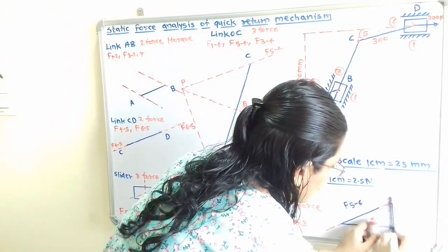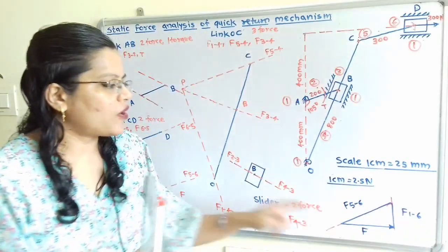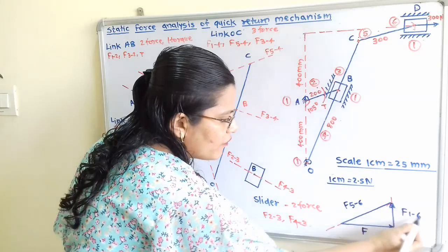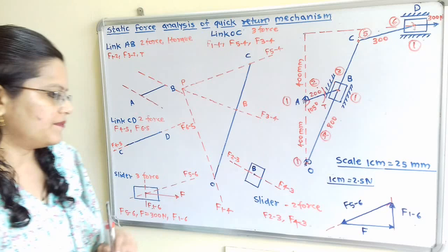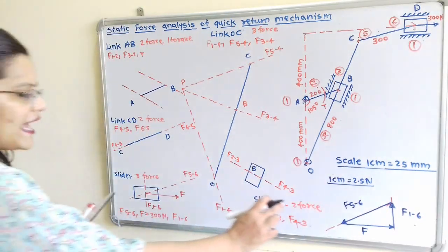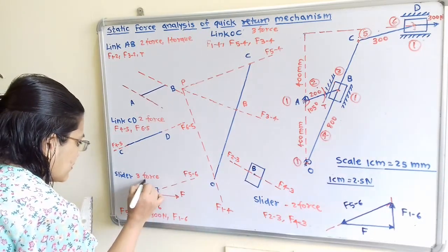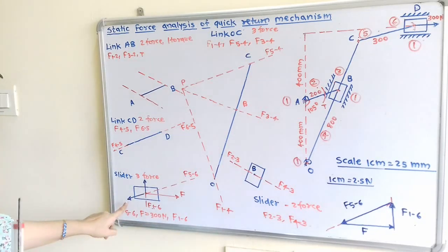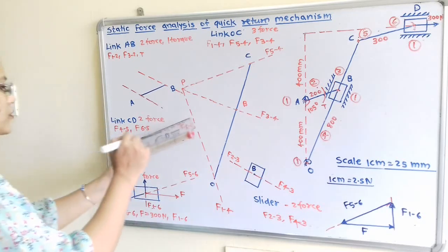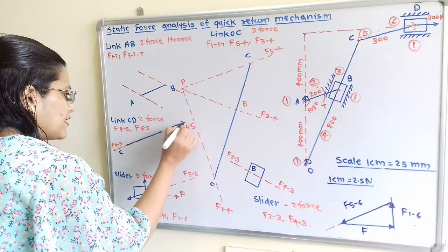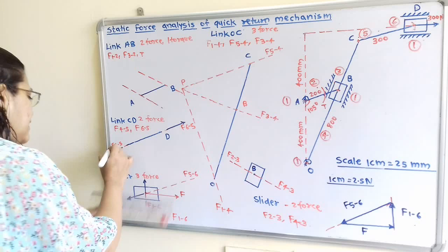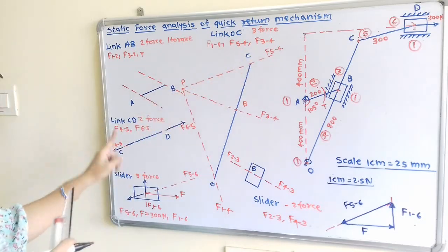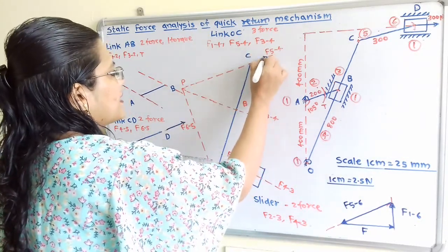Completing the force polygon: F of 1 to 6 is vertical and F of 5 to 6 is in the downward direction. F of 5 to 6 and F of 6 to 5 are equal in magnitude but opposite in direction. Therefore F of 6 to 5 and F of 4 to 5 are shown in opposite direction at point C. F of 4 to 5 and F of 5 to 4 are also equal in magnitude but opposite in direction — this fixes the direction.